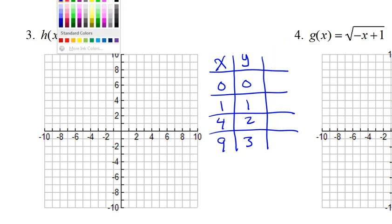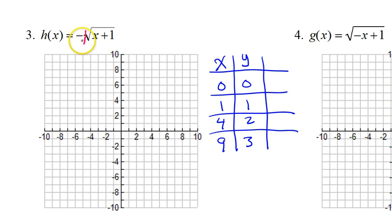Now in the third column, we take the a value, which in this case is negative one, and we multiply that by the y values. So I'm going to do negative one times all the y values. Negative one times zero is zero. Negative one times one is negative one. Negative one times two is negative two. And negative one times three is negative three.